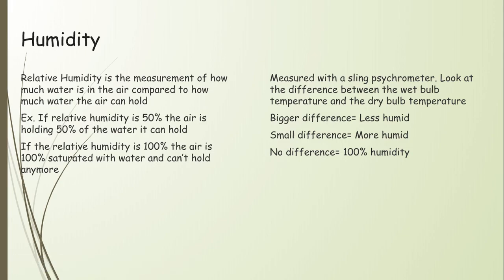After layers, air masses, and fronts, we looked at specifics of weather measurements. One thing we measure is relative humidity — how much water is in the air compared to how much water the air can hold. Warm air holds more water; cold air doesn't hold as much. If relative humidity is 50%, the air is holding 50% of what it could. At 100% humidity, the air is completely full of water and no more can be added. We measure this using a sling psychrometer, which is basically two thermometers.